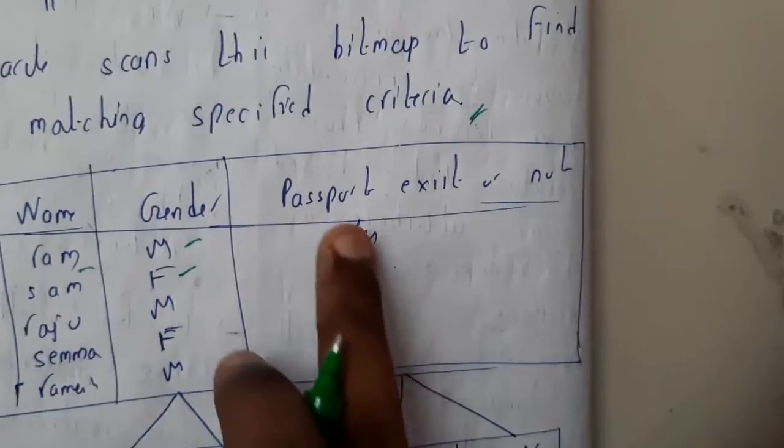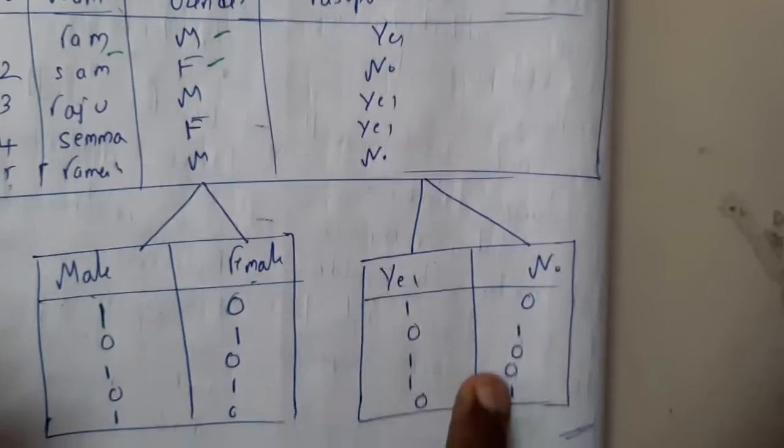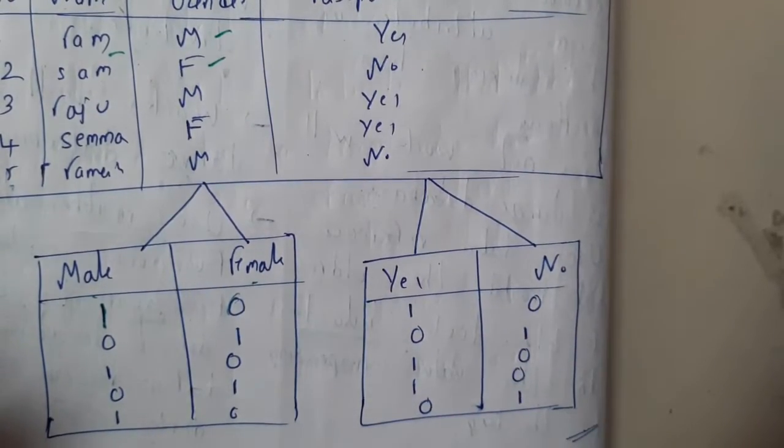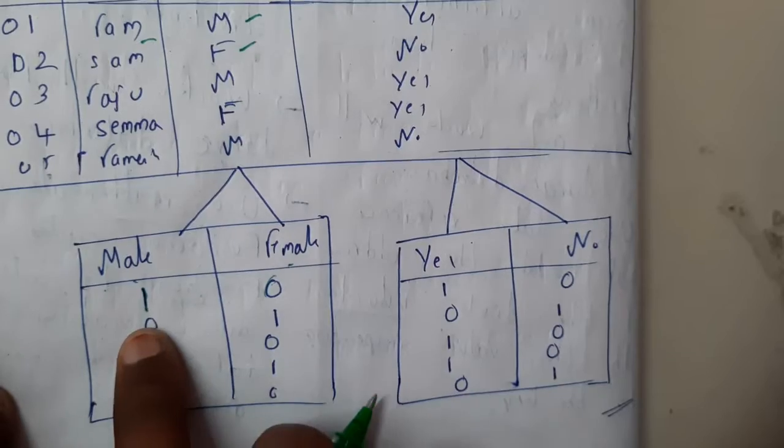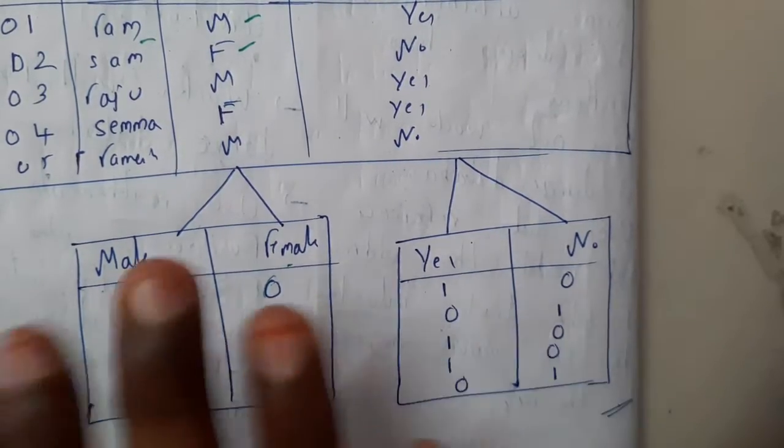Similarly for passport, if they are having passport yes or no. I hope everyone got a small idea. Remember, in a single row never we'll be having two ones or two or more ones for a particular column. I hope everyone got a small idea on this.